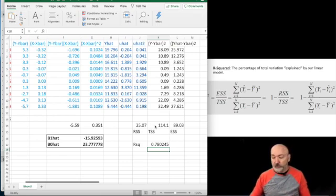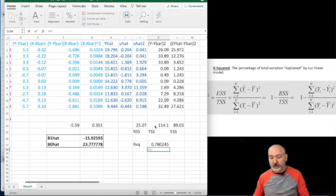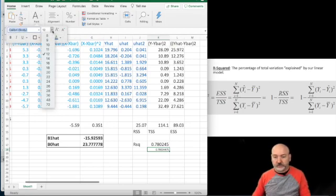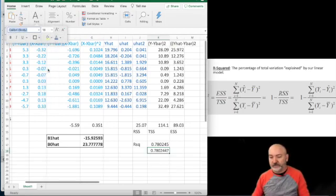And of course, that should be equal to 1 minus the percentage of variation that we are unable to explain. So if we take 1 minus the RSS divided by the TSS, we get the same thing. Just in a much smaller font. There we go.